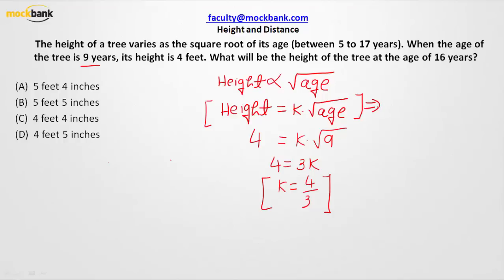Now we know what is the value of our proportionality constant, that is 4 over 3. And hence we have got this equation to be height equals 4 over 3 times square root of the age of the tree. Now the problem says what if the age is 16 years?